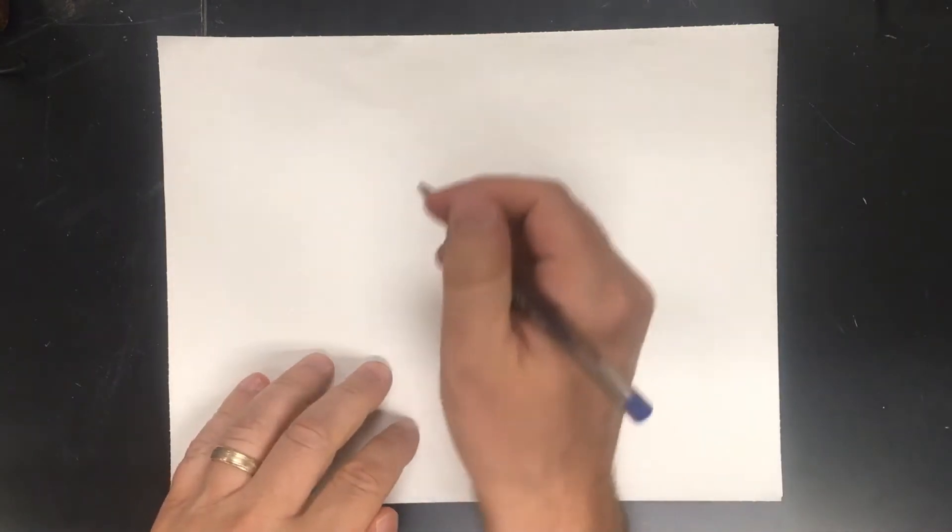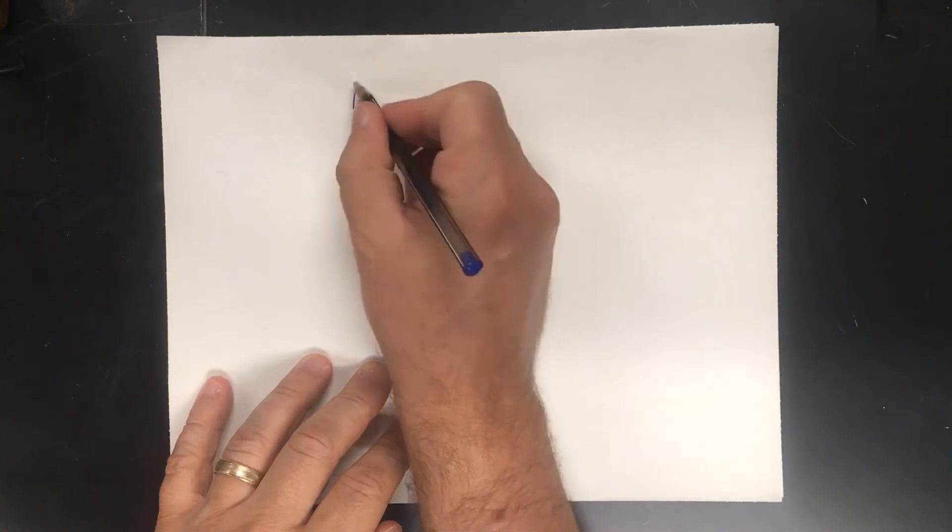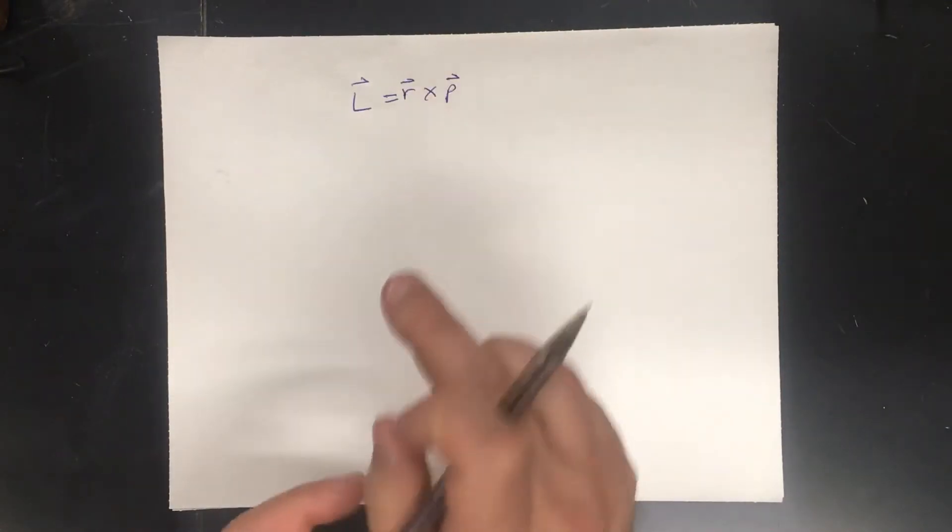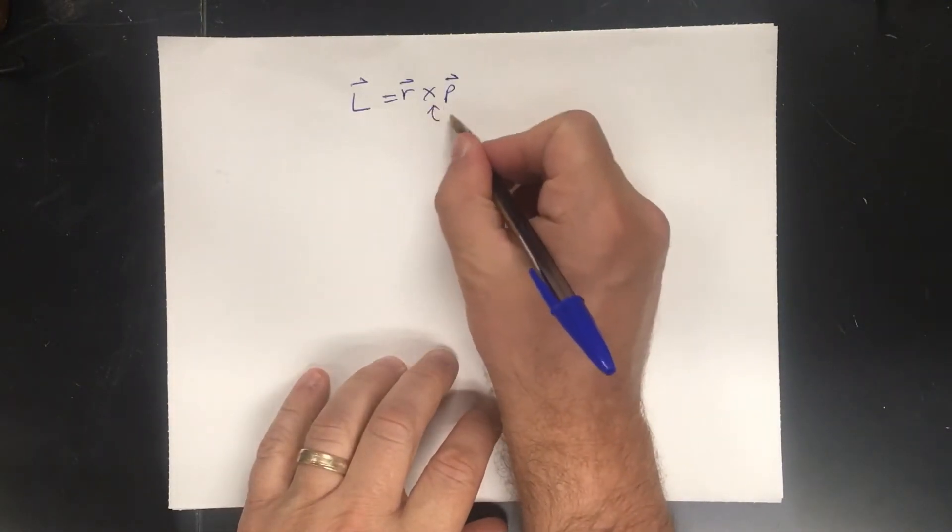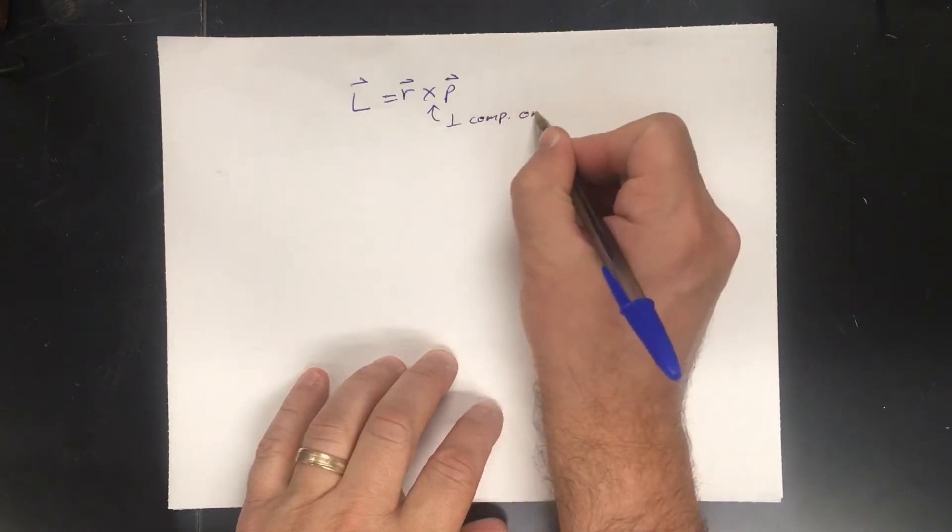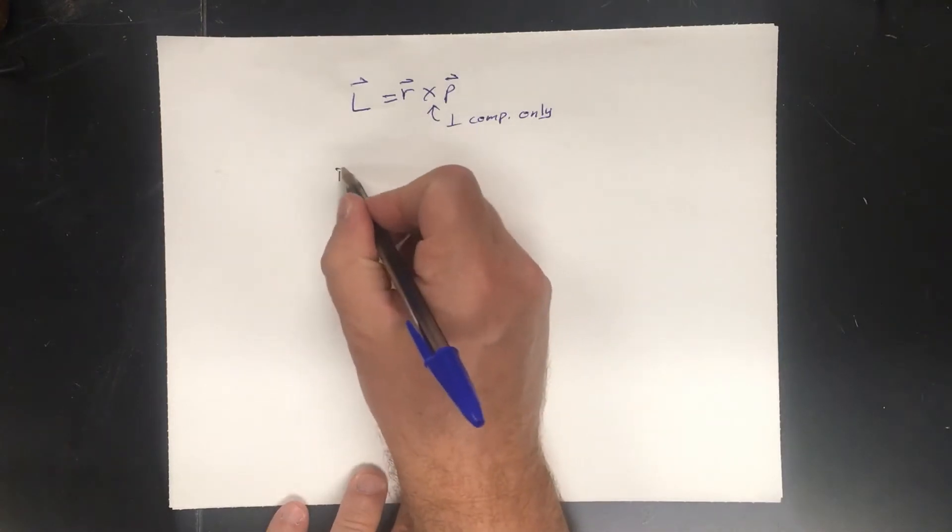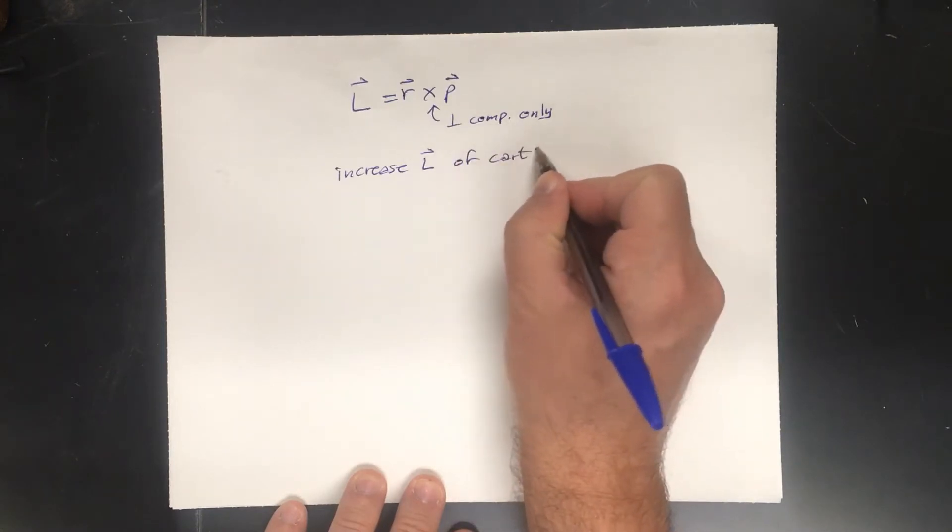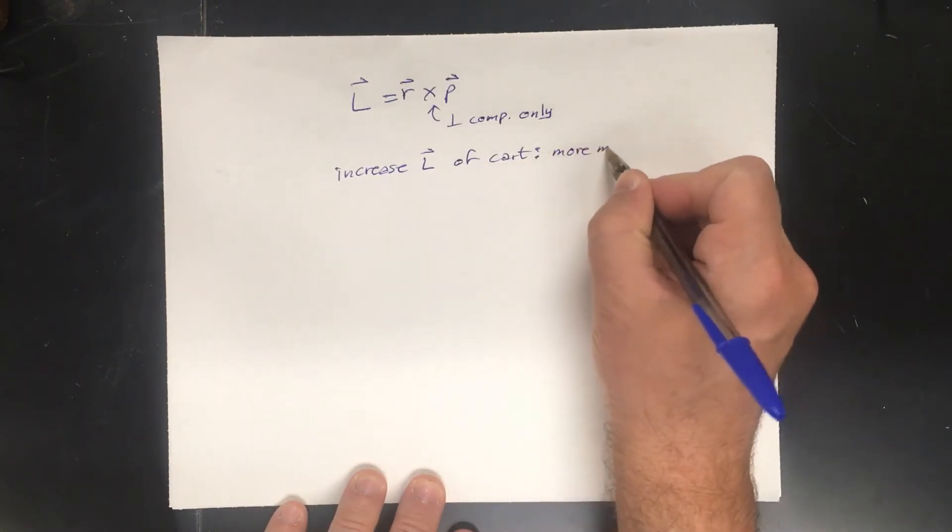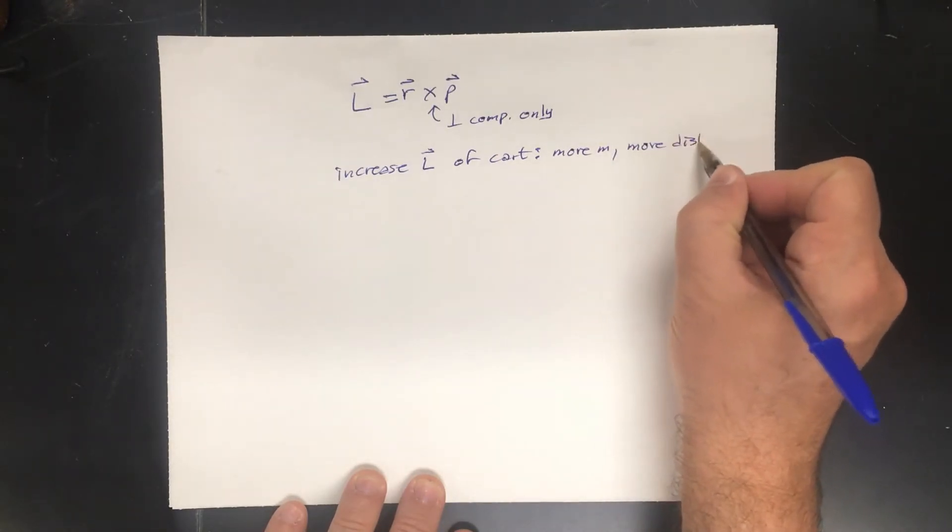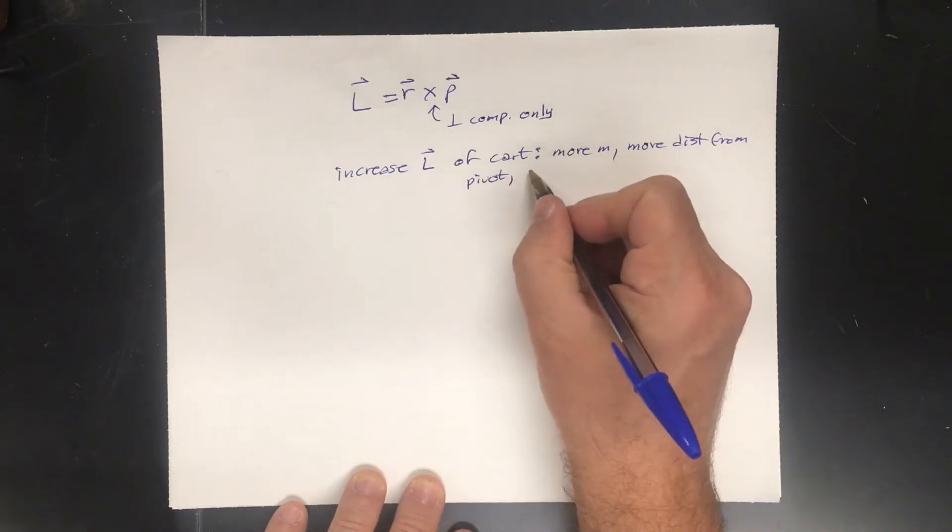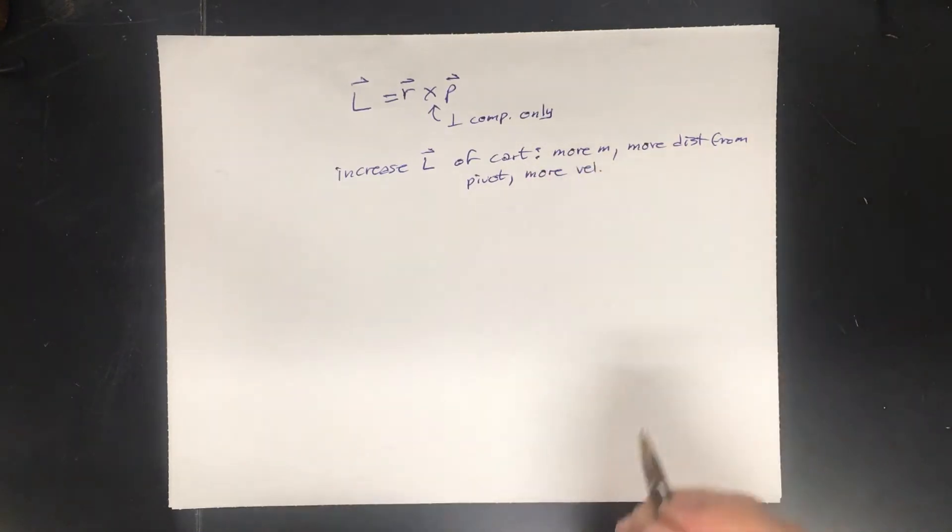So angular momentum from a linear object. That's very interesting, isn't it? Well, in physics, the way that we write angular momentum, which is a vector, equals R cross P. Now, I've used this cross product before, and some people are like, what is that? This says parallel components only. Now, you'll notice that in the lab, we found out these things increase the angular momentum of the cart. And that was more mass, more distance from the pivot. And what was the other one? Oh, and more speed.